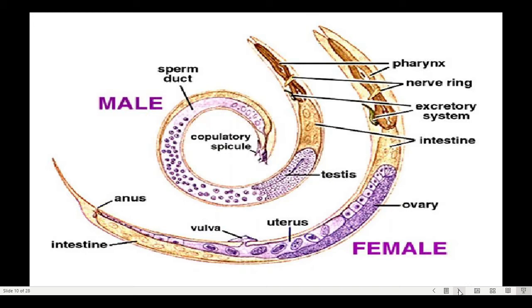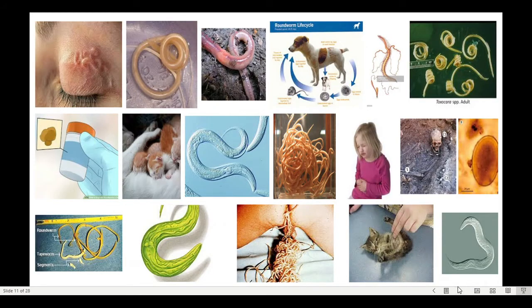Looking at their anatomy: when male, they have testes and sperm duct; the female has ovary and uterus. There are free-living and harmful varieties among roundworms. Previously we had flat; now these are round.